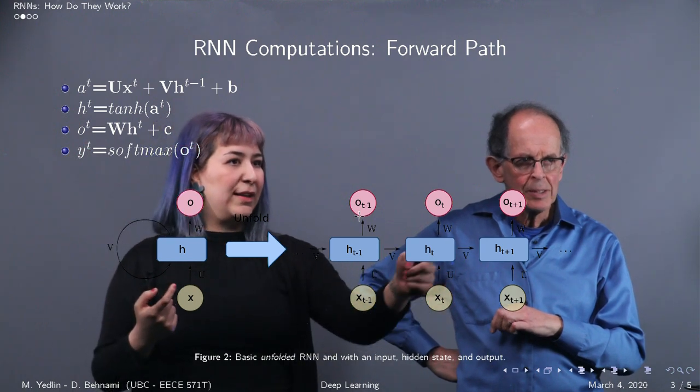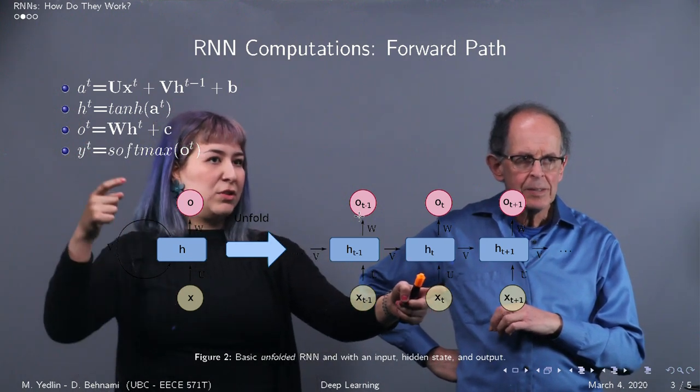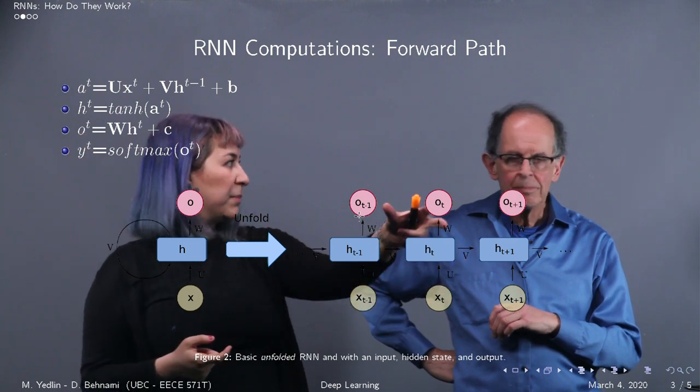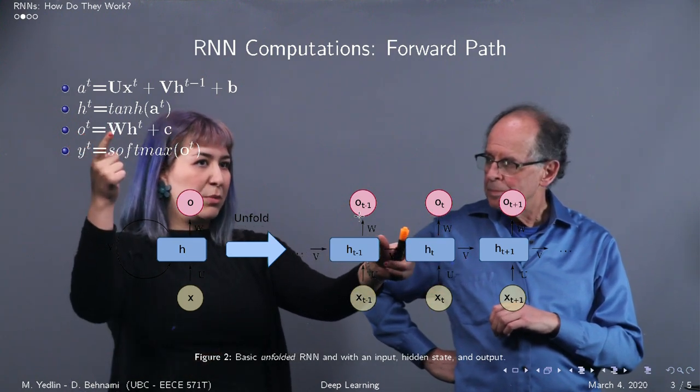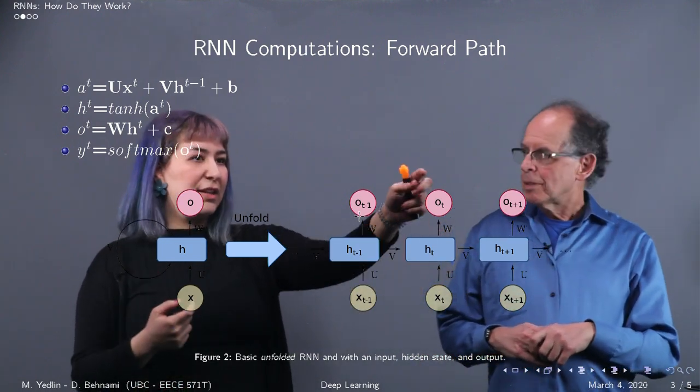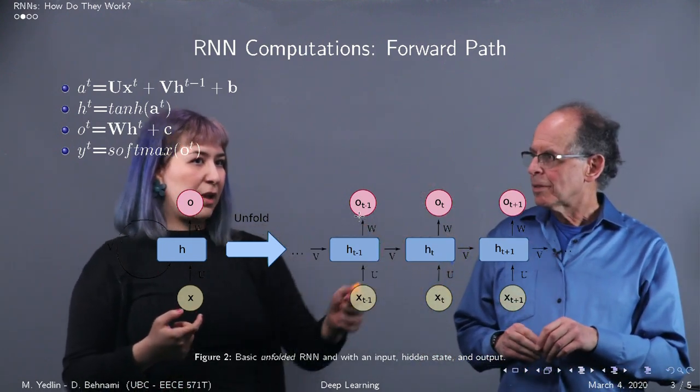So that will be what's happening inside this blue block. And then in order to compute the output, you have to take the hidden state, multiply it by another set of parameters, which we're denoting with w, and add another bias c.